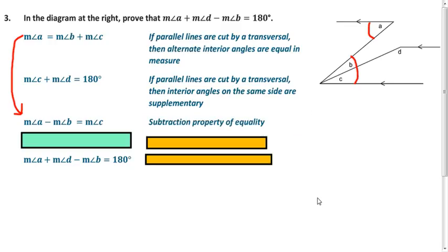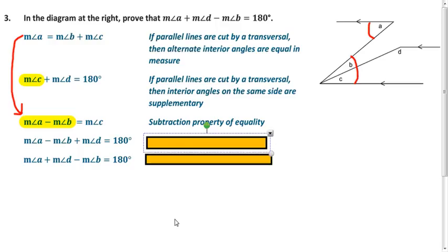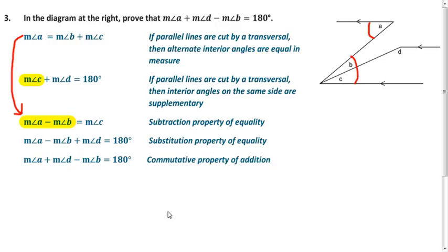And so now we're going to substitute this whole thing. We're going to plug that in for the measure of angle C. And when we do that, that's our statement. And our reason is substitution. And how do we go from this fourth line to the fifth one? Well, all we did was switch the order here. That's the commutative property. So in this lesson, we learned how to write unknown angle proofs. Thank you for watching this video.